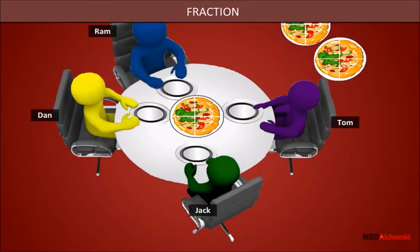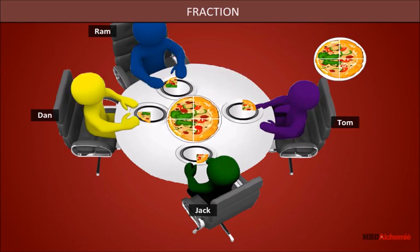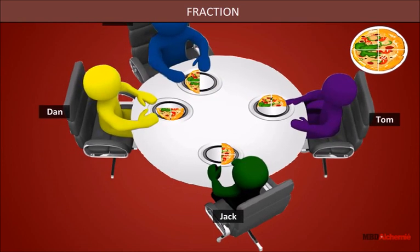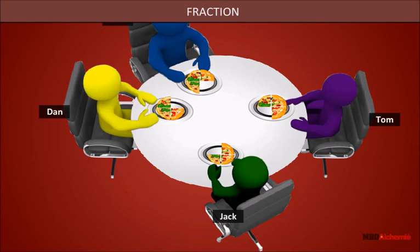First, they distribute the quarter slices of the first pizza between them. Until now, they have equal quantity of pizza. They repeat the same procedure with the second pizza. Still they have equal amount, so they repeat this with the third pizza.